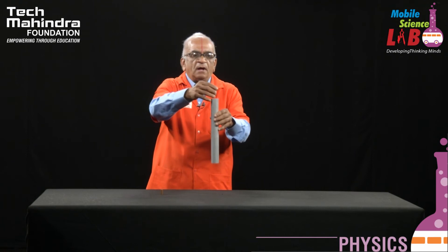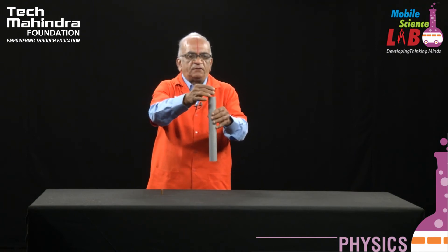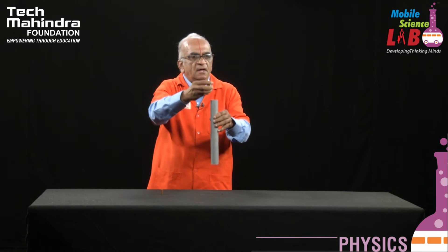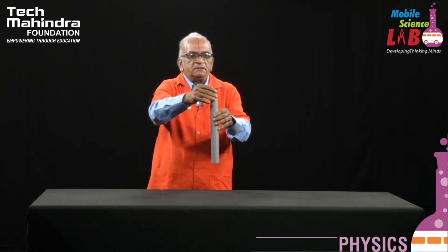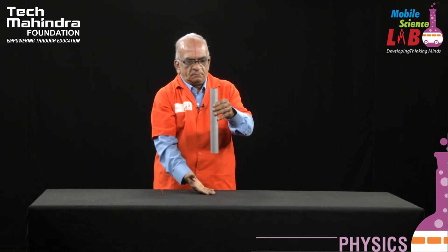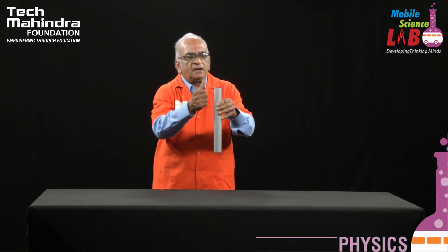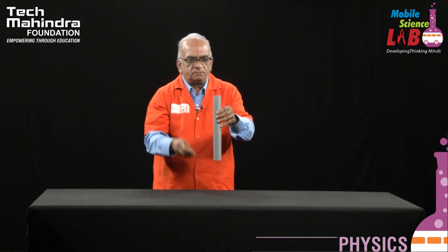Now I am adding two more neodymium pieces so that the magnetic flux — the field strength — is increased. And then I am repeating this experiment. When I do it, you can see that it has taken even more time; the fall is further slowed down.